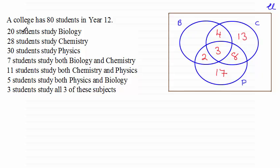And finally, 20 students study biology. So if you add up the four, three and two and take that away from 20, you find you're left with 11.